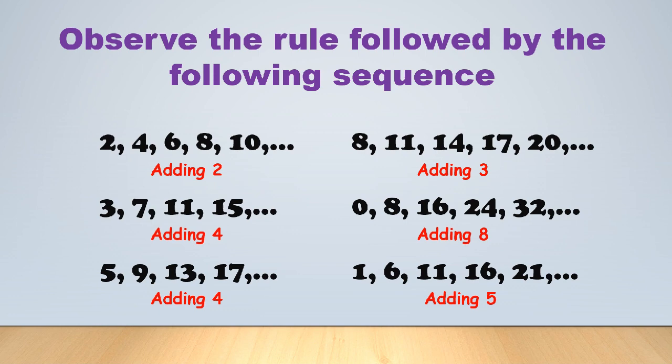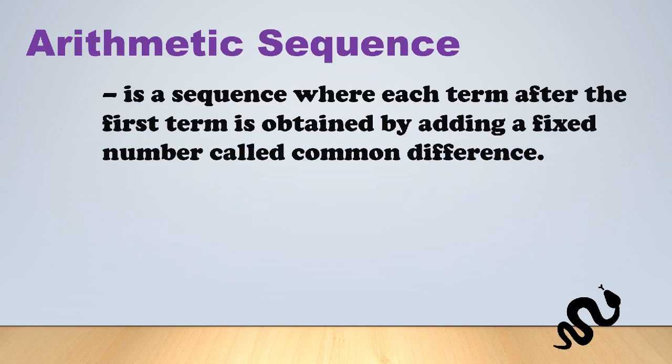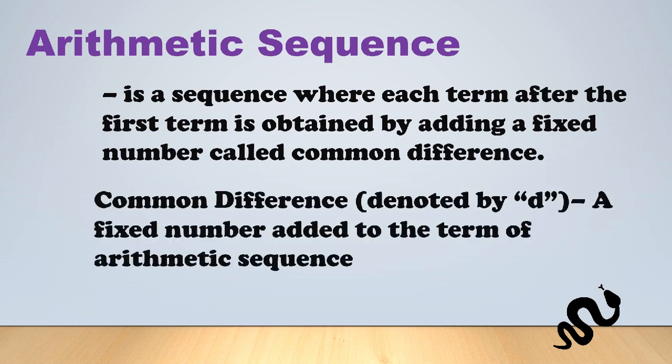If adding a fixed number is the rule of your sequence, this is an example of arithmetic sequence. Arithmetic sequence is a sequence where each term after the first is obtained by adding a fixed number called common difference. Common difference, denoted by the letter D, is a fixed number added to the terms of an arithmetic sequence.